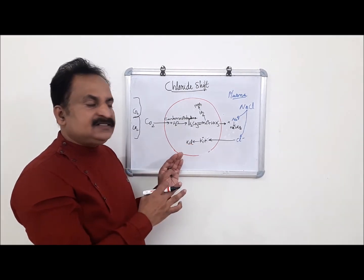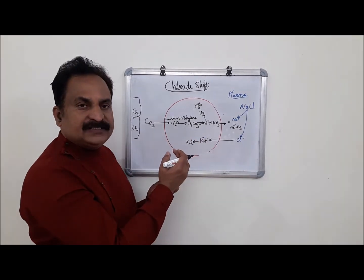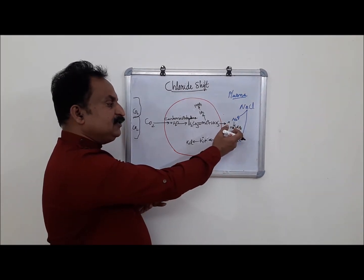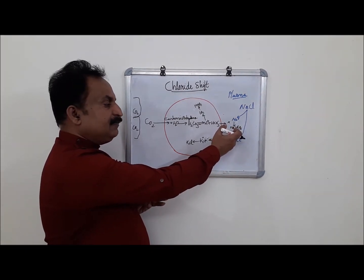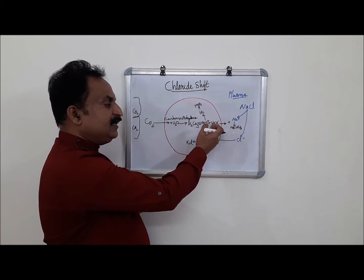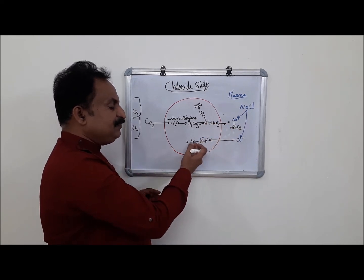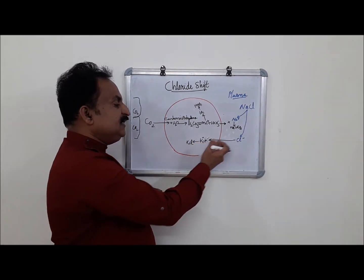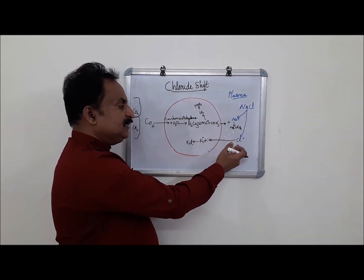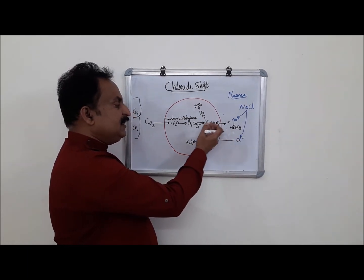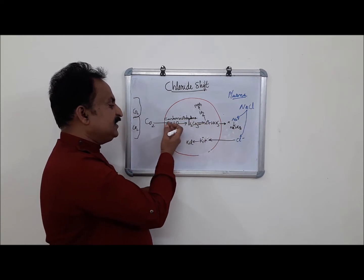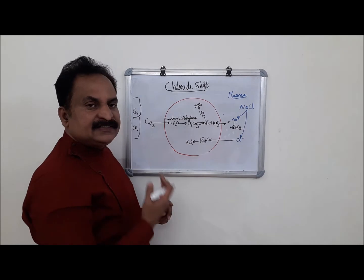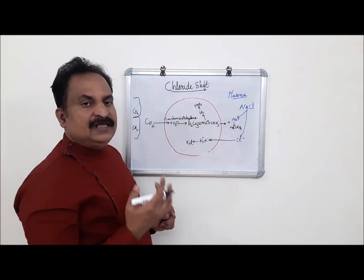In the lungs, the reverse reaction takes place. Sodium bicarbonate will split to form sodium ions and bicarbonate ions. Bicarbonate ions enter into the RBC. At the same time, potassium chloride will split to form K+ and Cl-; Cl- will diffuse into the plasma. The reverse of this reaction occurs and carbon dioxide is released through the lungs.